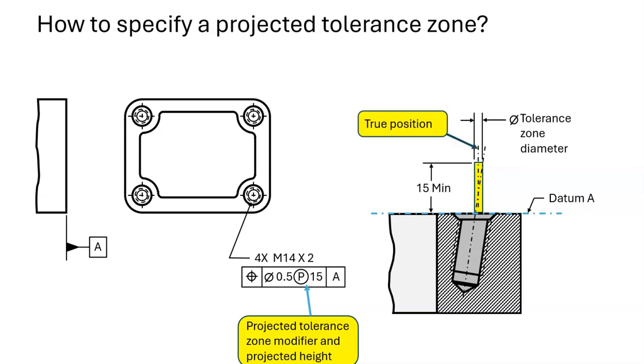The tolerance zone is centered on true position. The axis of the bolt must fit within the projected tolerance zone.